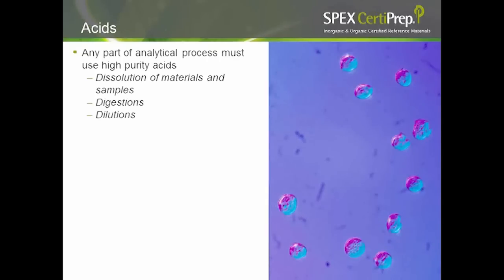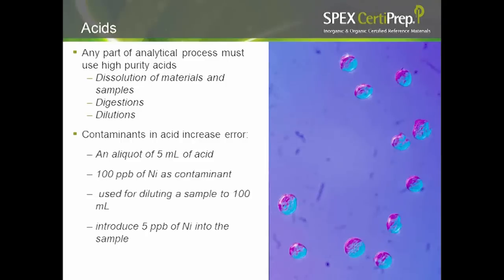Likewise with acids — if you're using an analytical process like ICP-MS, high purity acid is a must for dissolution of materials, digestions, and dilutions. Even a small amount of contamination in acid can cause a lot of contamination in your final product. For example, if you had a 5 mL aliquot of acid with 100 ppb of nickel and used it to dilute a sample to 100 mL, you'd be introducing 5 ppb of nickel into your sample. So when possible, use high purity acids.